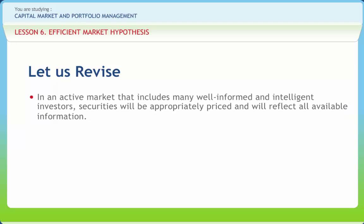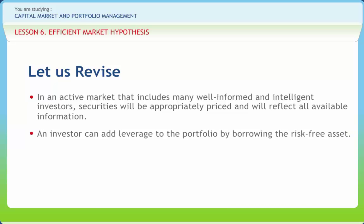In an active market that includes many well-informed and intelligent investors, securities will be appropriately priced and reflect all available information. If a market is efficient, no information or analysis can be expected to result in outperformance of an appropriate benchmark. Fama divided the Overall Efficient Market Hypothesis (EMH) and the empirical tests of the hypothesis into three sub-hypotheses depending on the information set. An investor can add leverage to the portfolio by borrowing the risk-free asset, which allows for a position in the region above the efficient frontier.